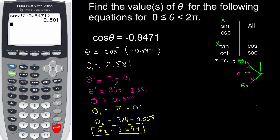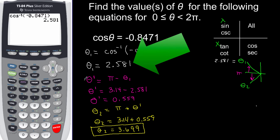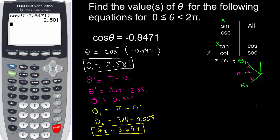So those are the two angles that have a cosine of negative 0.8471: theta one is 2.581 and theta two is 3.699. You've gotta make sure you pay attention to mode and remember there are two different values — one in the second quadrant and one in the third quadrant. We're gonna practice this a little bit more. We've got two other examples to take a look at.